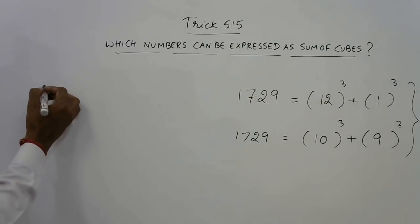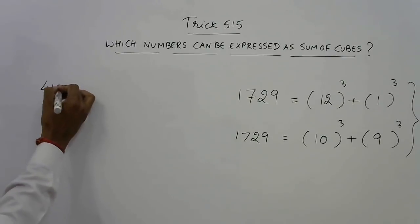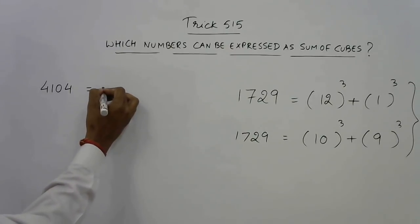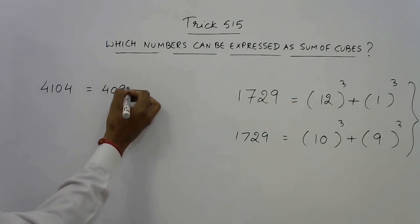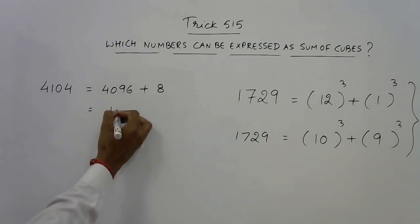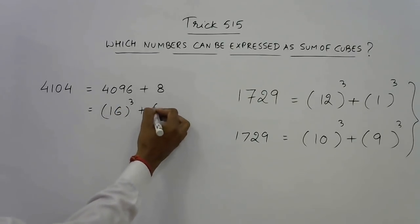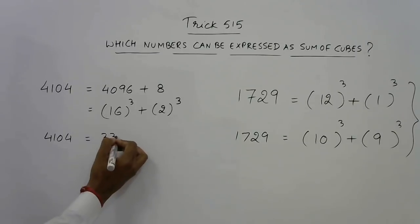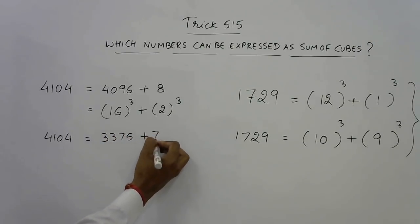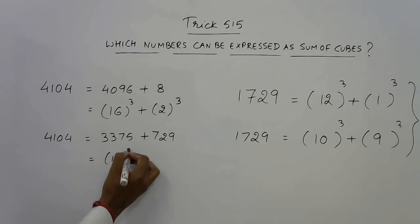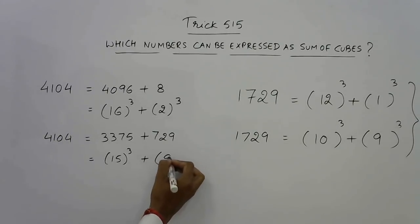That number is 4104. Now 4104, if you express this as 4096 and 8, and if you know that 4096 is actually 16 cube and 8 is obviously 2 cube, then this is one representation. And 4104 if broken down as 3375 and 729, this will give us 3375 is 15 cube and 729, as here it is 9 cube.